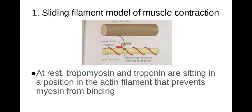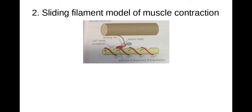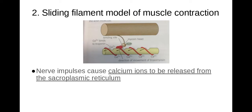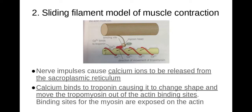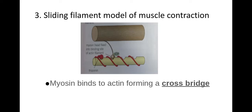The sliding filament theory model works as follows. At rest, tropomyosin and troponin are positioned on the actin filament in a way that prevents myosin from forming a cross-bridge. However, once a nerve impulse arrives, this causes calcium to be released from the sarcoplasmic reticulum — that modified endoplasmic reticulum. These calcium ions bind to troponin, causing it to change shape and move the tropomyosin out of the actin binding sites, so myosin and actin can now bind to form a cross-bridge.